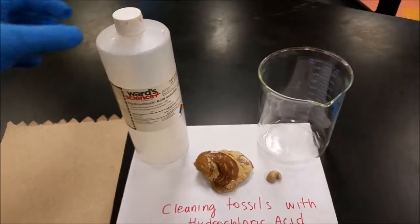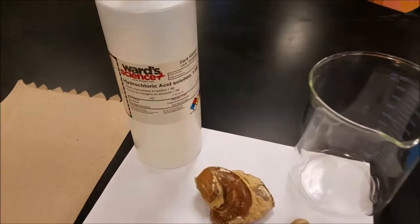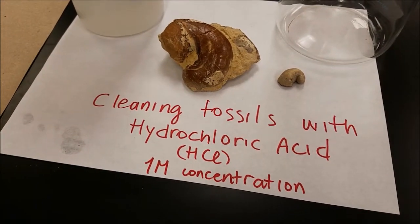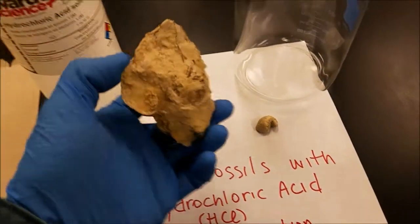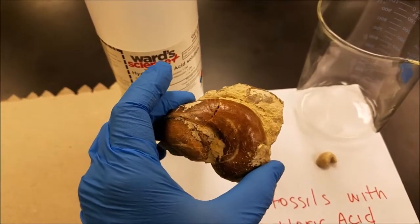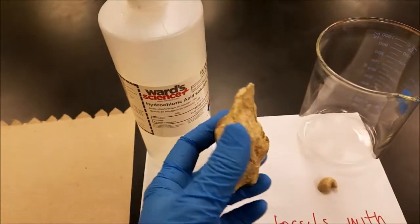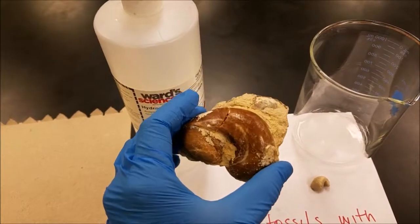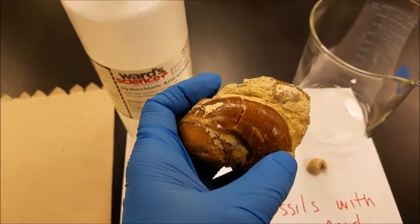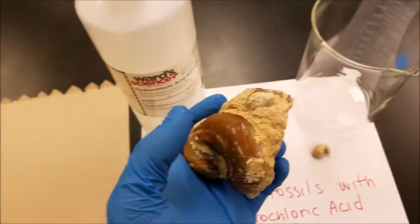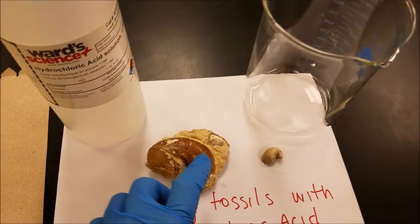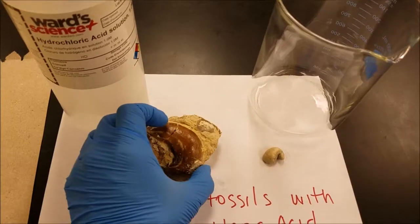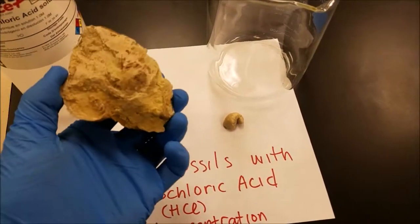Okay guys, today we're going to be cleaning a fossil using one molar concentration of hydrochloric acid. This is a fossil I found in Barton Creek Park area in Austin, Texas. As you can see, the fossil is in a matrix of limestone, and the best way to clean the limestone is to use acids.